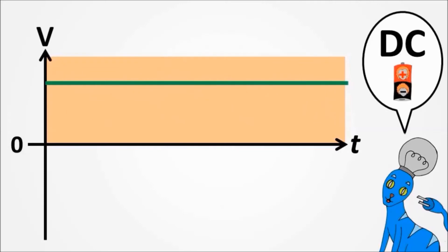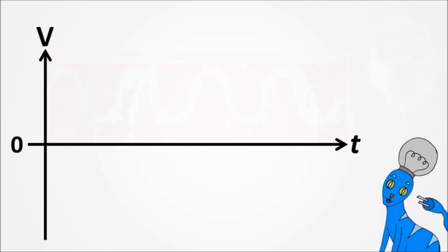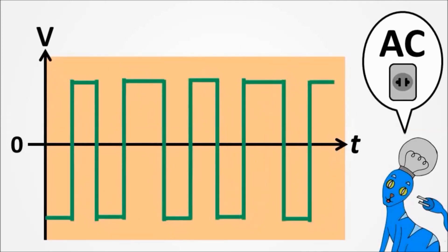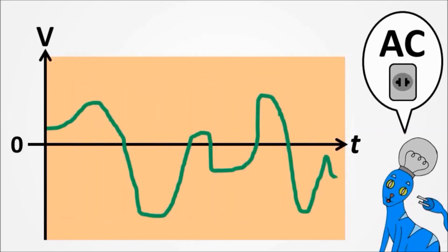The shape doesn't really matter. Now we have an AC energy in here. Observe that they all cross the voltage zero line. That's why they are AC.